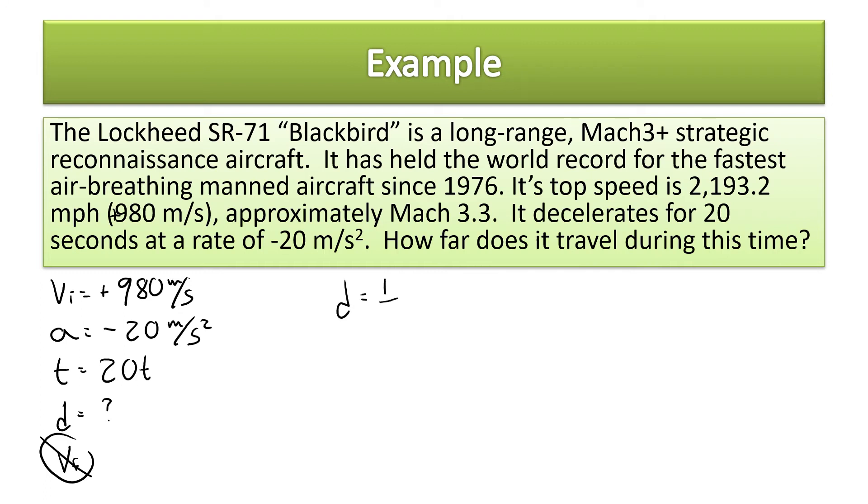We'll do now. I wrote it wrong—d equals vi t plus one half a times t squared. So we're looking for the displacement. vi is 980, the time is 20 seconds, plus one half times a is negative 20 meters per second squared, and then the time is 20. I was thinking about units, so that's why I wrote the units there.